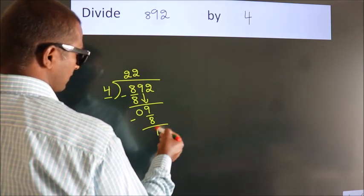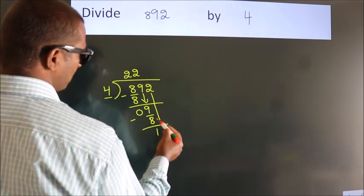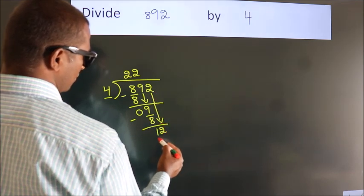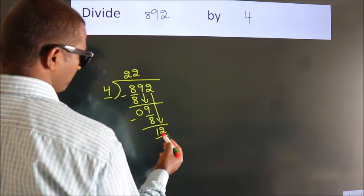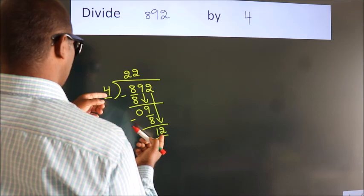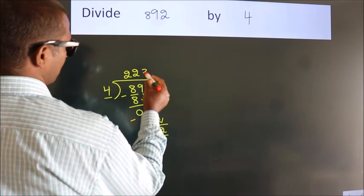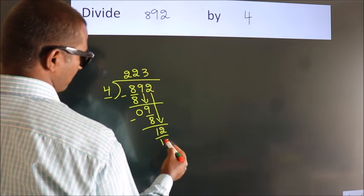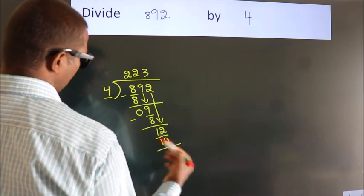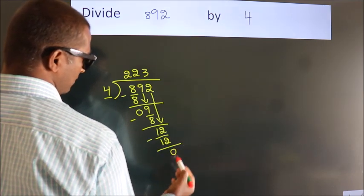After this, bring down the beside number. So, 2 comes down — so we have 12. When do we get 12 in the 4 table? 4 threes are 12. Now we subtract. We get 0.